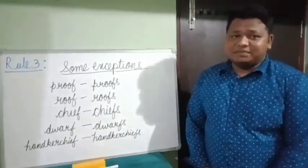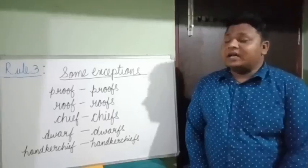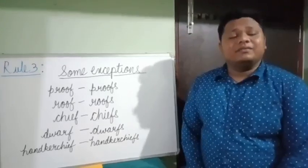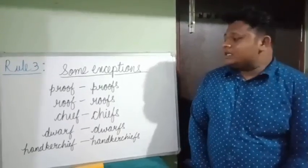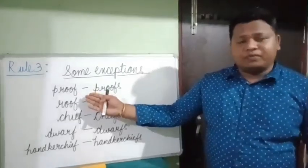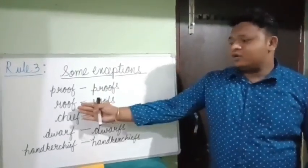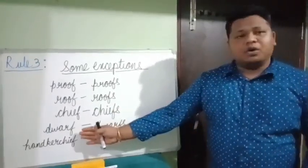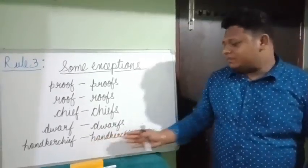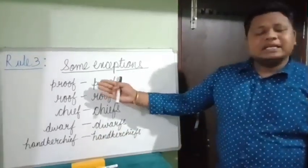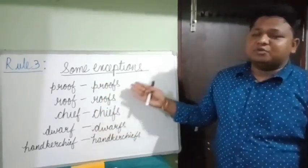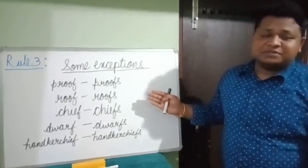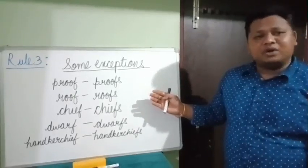There are some exceptions in rule number three. There are some nouns that end with F, but we do not replace F with VES. For example, proof — proofs; roof — roofs; chief — chiefs; dwarf — dwarfs; handkerchief — handkerchiefs. For these nouns which end with F, we add S to make the plural. You have to learn these exceptions by heart.